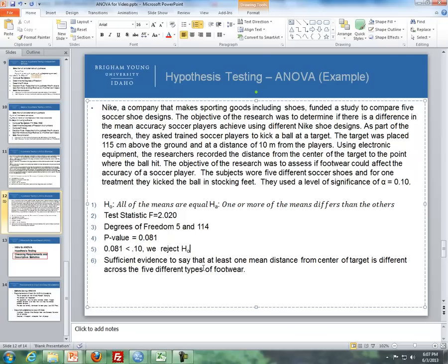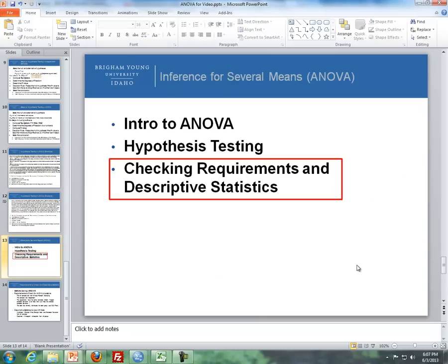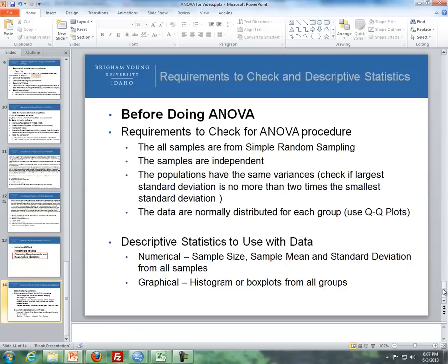And so we have sufficient evidence to say that at least one mean distance from center of target is different across the five different types of footwear. Okay, so now, the last thing I want to cover is checking requirements and descriptive statistics.